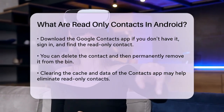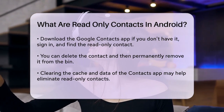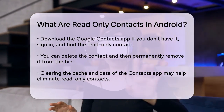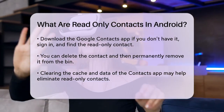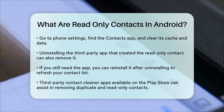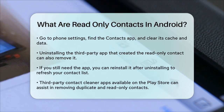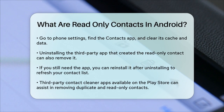A more drastic but effective method is to uninstall the third-party app that created the read-only contact. If you no longer need the app, this will remove the contact from your list. However, if you use the app regularly, you can reinstall it after uninstalling and the read-only contacts should be gone. Using a third-party contact cleaner app is another option. You can find these apps on the Play Store, and they can help you remove duplicate and read-only contacts from your device.